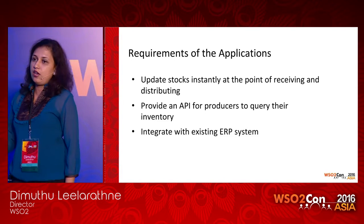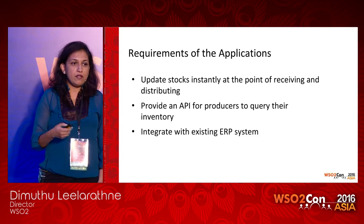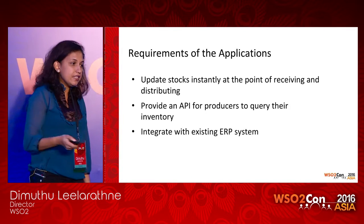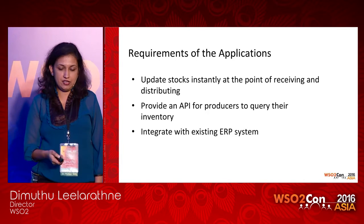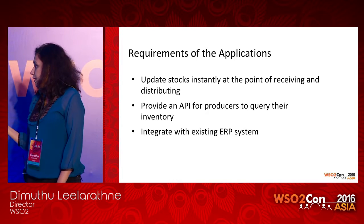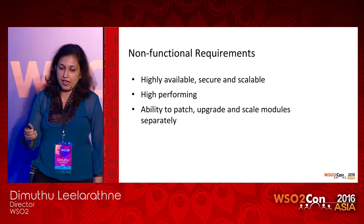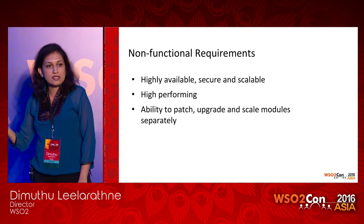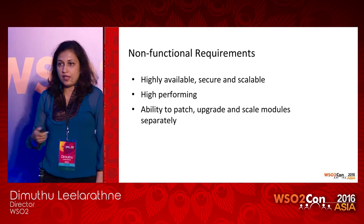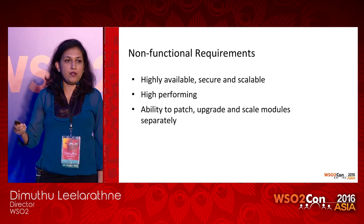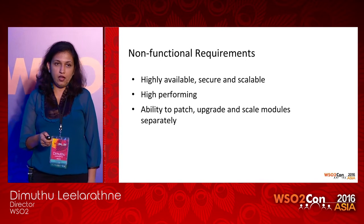These are the requirements of the application. They need to update stocks instantly at the point of receiving as well as distributing to consumers. They want to provide an API to producers to instantly get updates on stock availability, and producers can develop mobile applications to query stock amounts. They also need to integrate with the existing ERP system. Non-functional requirements include high availability, security, scalability, and performance. They also need to patch, upgrade, and scale modules separately, with plans to potentially sell the system or host it as a cloud service.